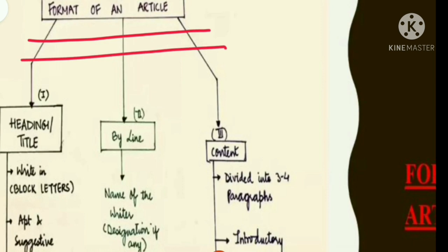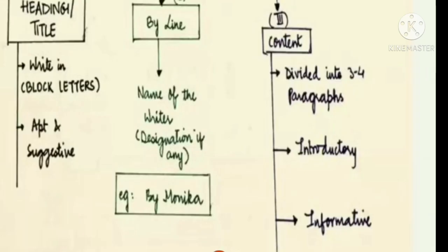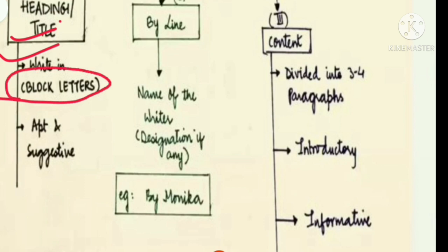Let's talk about the format of an article. First, we have to write the heading, then the byline, and then the content. Let's talk about all three individually. The heading should be written in block letters and it should be apt and suggestive.